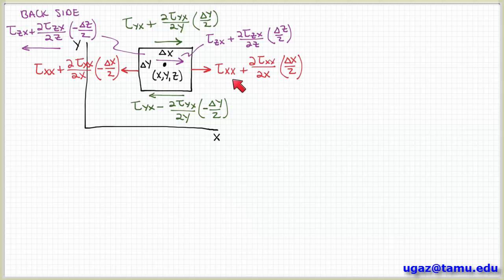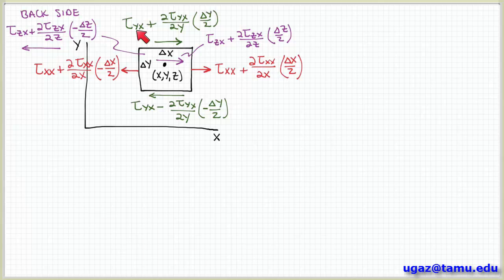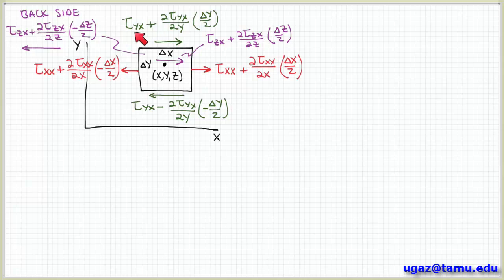Because we have two vector quantities to keep track of at the same time, the stress is described by a tensor quantity that has nine components. We denote it as tau_yx. The first index represents the orientation of the surface — this is the stress on a surface with a normal in the y direction due to a force in the x direction. So the first index indicates the surface orientation, and the second index indicates the force direction.